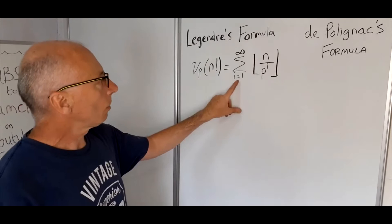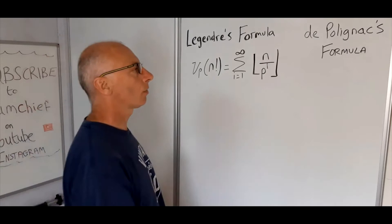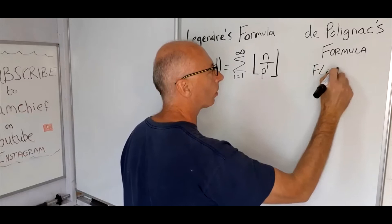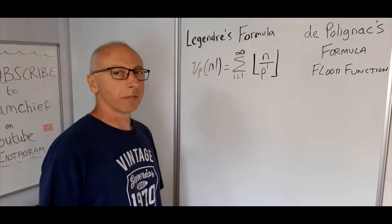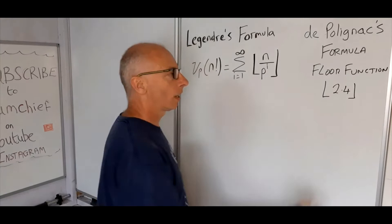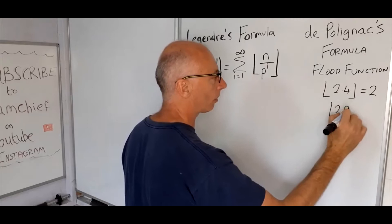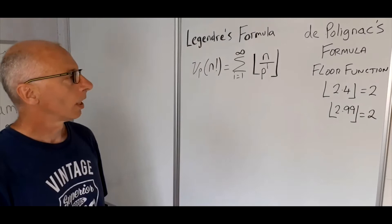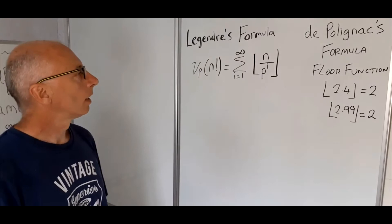Then here we've got summation from 1 to infinity, and again here we've got the floor function. Floor function basically gives us a value of any real number rounded down. For example, the floor value of 2.4 equals 2. Similarly, the floor value of 2.99 still equals 2. That's going to be very important when we're calculating this formula here.